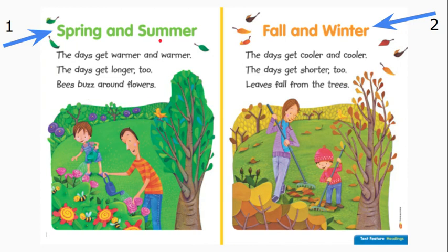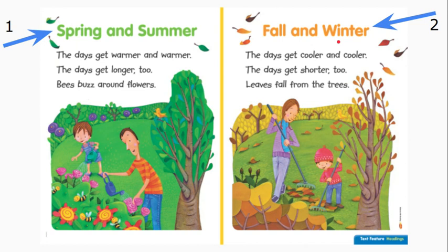Let's take a look at number two. This heading says fall and winter. The text below says the days get cooler and cooler. The days get shorter too. Leaves fall from the trees. The heading fall and winter gives information about the text in this section. It tells us what the section will be about. The text below was about fall and winter.